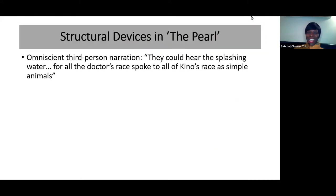What about this particular text? It's using the omniscient third person because we see the crowd and what they hear. We also know that for 300 years there's been racial tension and racism, that the doctor's race spoke to all of Kino's race as simple animals—this dehumanization. The narrative viewpoint is able to tell us what the crowd think, what Kino feels, the prejudice in Mexico, Kino's feelings, the doctor's thoughts. It is able to look at everything, an all-knowing narrator.